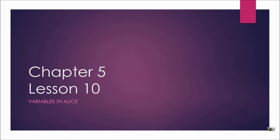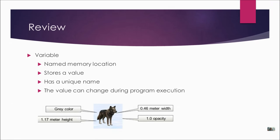Chapter 5 Lesson 10: Variables in Alice. Before we start today's program, let's review from your lesson yesterday where you learned about variables. A variable is a named memory location that stores a value. It has to have a unique name, it has to be different from procedures and other keywords, and the value of the variable can change during program execution.